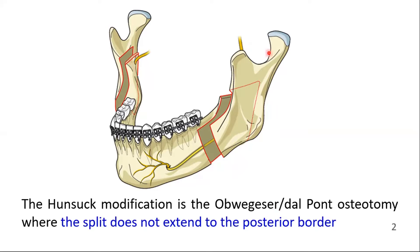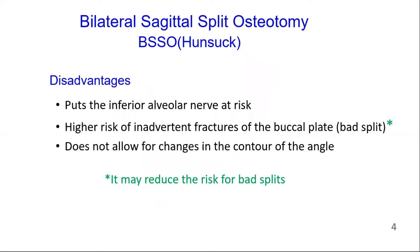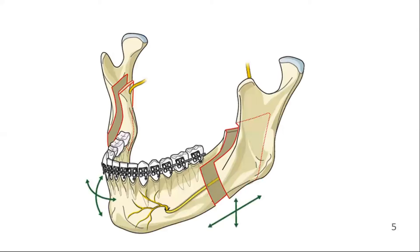It divides the mandible into two smaller condyle-bearing segments and a large segment consisting of the mandibular body including teeth and chin. It may reduce the amount of bony interferences between the proximal and distal segments, and also it may reduce the risk for bad splits. This is a universal procedure that can be employed for all mandibular movements.